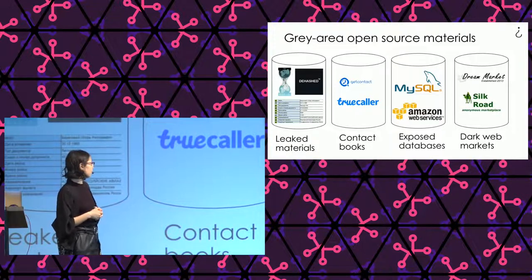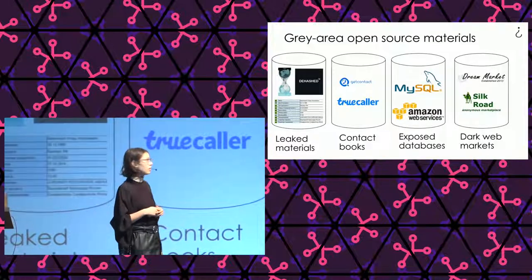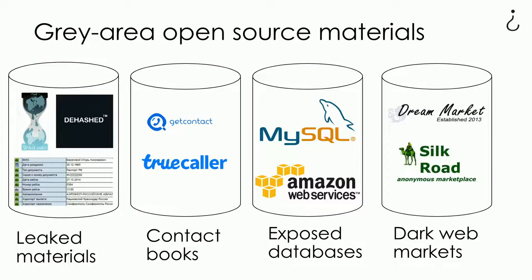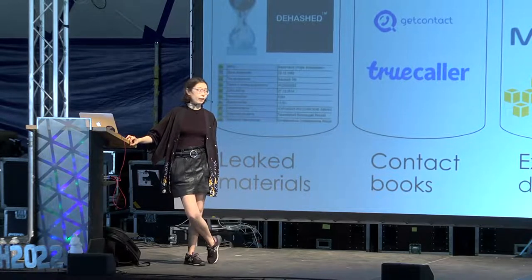Another grey area category is databases on MySQL, Amazon Web Services, or even Google Sheets — databases that users made public without realizing it. There's the ethical question of whether to use information the user didn't know was public. The last one is dark web markets like Silk Road and Dream Market. We don't really do research there; it mainly applies to occasionally downloading leaked databases.